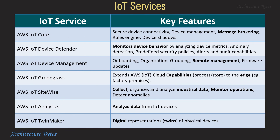IoT services: IoT Core serves as a message broker with features like rules engine. IoT Device Defender monitors device behavior for security. IoT Device Management can be used for remote management of devices. IoT Greengrass extends AWS IoT cloud capabilities to the edge. IoT SiteWise can collect industrial data and monitor operations. IoT Analytics is used for analyzing data from IoT devices. IoT TwinMaker is used for digital representation of physical devices.